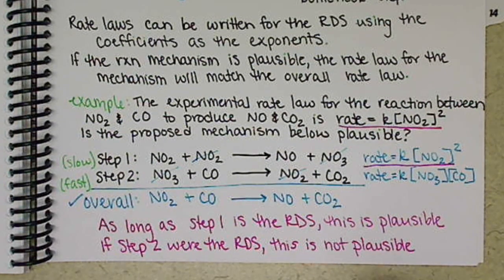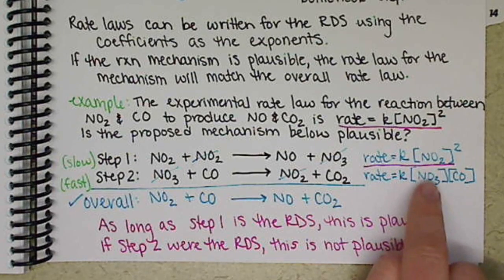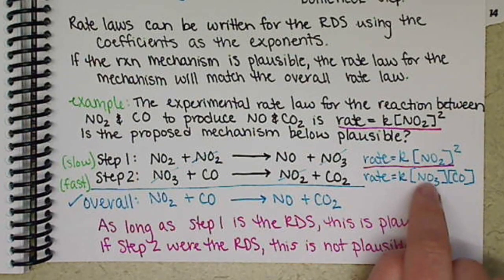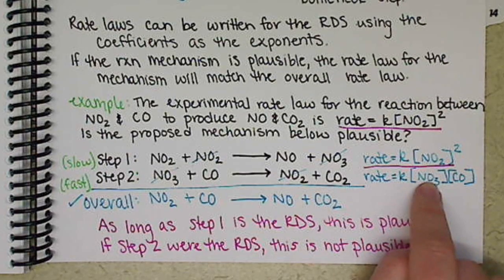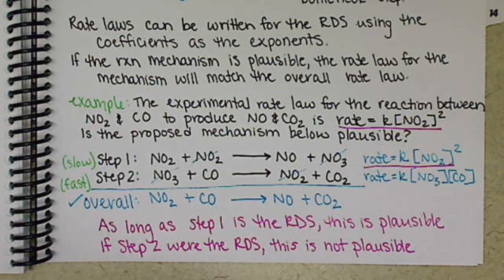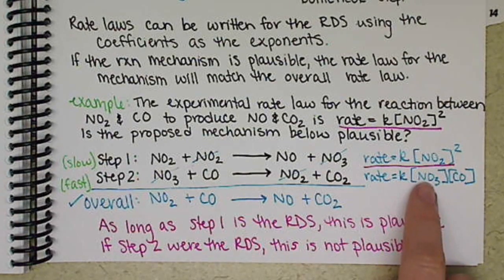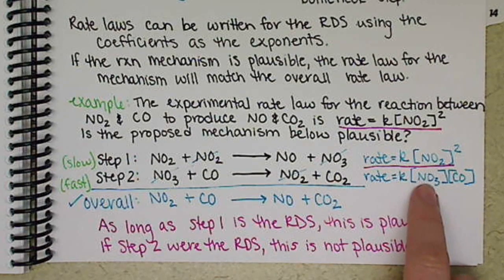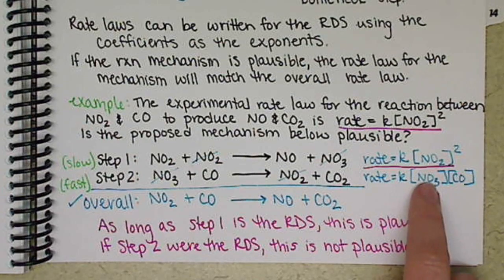Now in the next example, what I want to look at is what happens when you get a rate law for an elementary step that includes an intermediate. Just because that rate law has an intermediate does not immediately rule this out as a plausible mechanism. What we want to do is look towards the other elementary steps to try and cancel out that intermediate in the rate law.